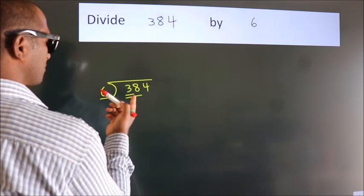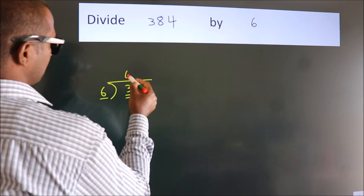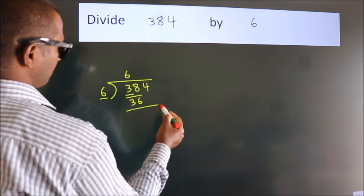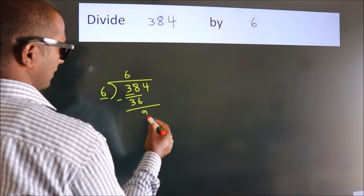A number close to 38 in 6 table is 6 times 6, 36. Now we should subtract, we get 2.